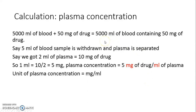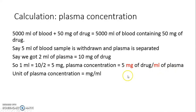Say we have 5000 ml of blood in the body and we give 50 mg of drug. We withdraw a 5 ml blood sample, from which we separate plasma. Say we get 2 ml of plasma containing 10 mg of drug. So in 1 ml, the drug amount is 10 divided by 2 equals 5 mg per ml. The plasma concentration is therefore 5 mg per ml.